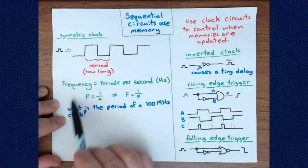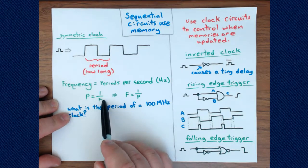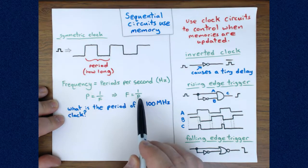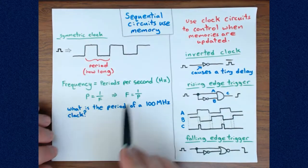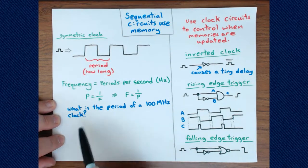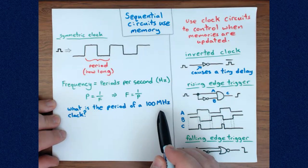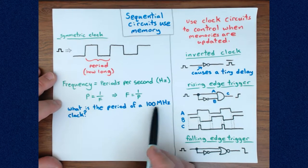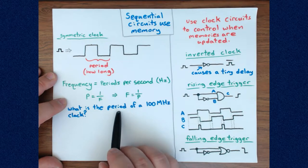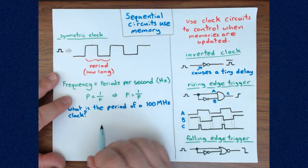Hertz, abbreviated Hz, refers to how many periods of a particular wave occur per second — that's what frequency is. In mathematical terms, the period is the inverse of the frequency, and the frequency is the inverse of the period. So let's say we have a 100 megahertz processor, which is completely reasonable for some commercial embedded device today — maybe some fiber optic test equipment. We know it has a 100 MHz CPU speed, and we want to know the period of that clock.